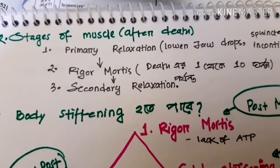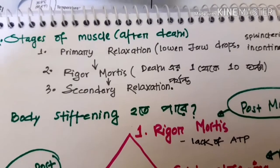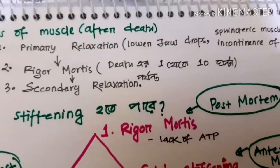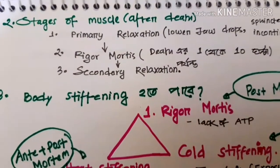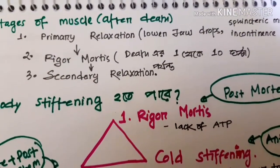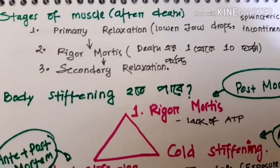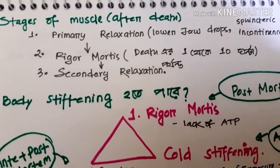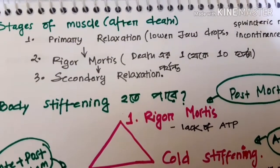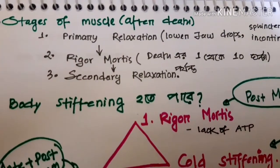In primary relaxation, the muscles of our body naturally relax and lower. Our sphincter muscles also undergo relaxation — the sphincter muscles contract less, leading to incontinence of urine and feces. This is the primary relaxation after death, where our muscles move from an active state to relaxation.